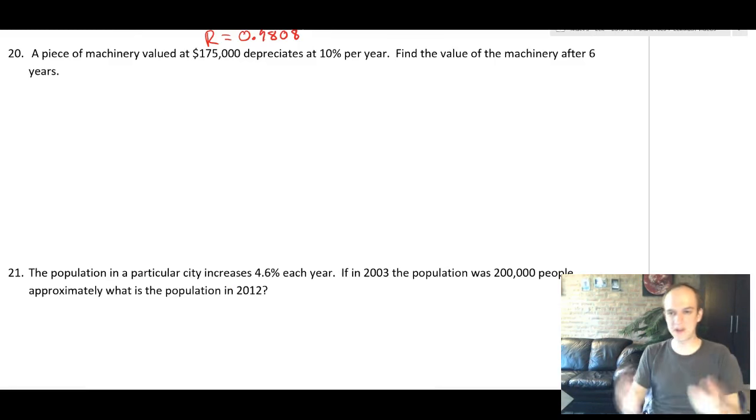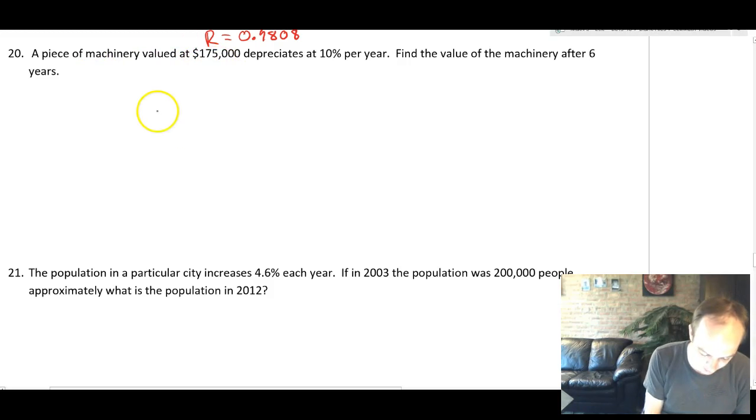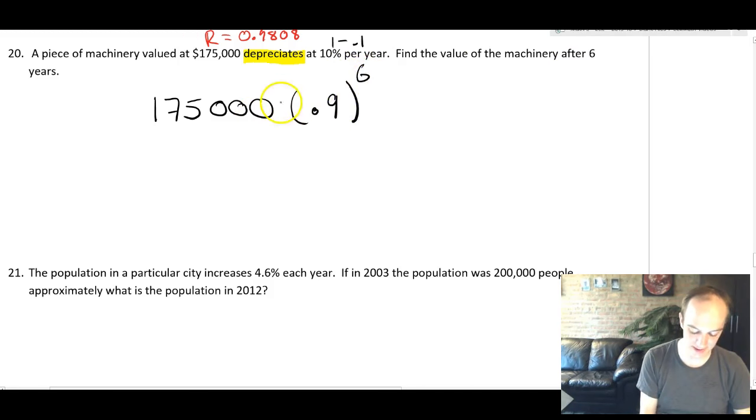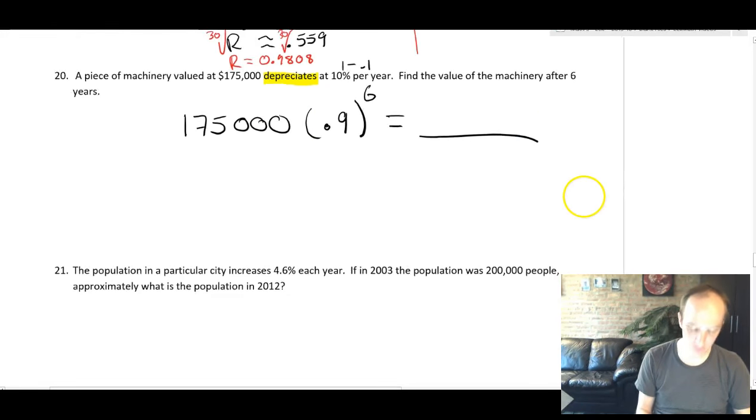All right, we've been mixing it up with all these different word problems, but now we're going to go back to the basics. A piece of machinery valued at 175,000 depreciates at a rate of 10% every year. Here, you've got to know what the word depreciates means. Depreciate means it loses value. So if it loses 10% each year, we're going to do 1 minus 0.1. That's the 10% of the decimal. So you get 0.9. And then after 6 years, that's going to be to the sixth. And whatever this is in your calculator, that will give you the value.